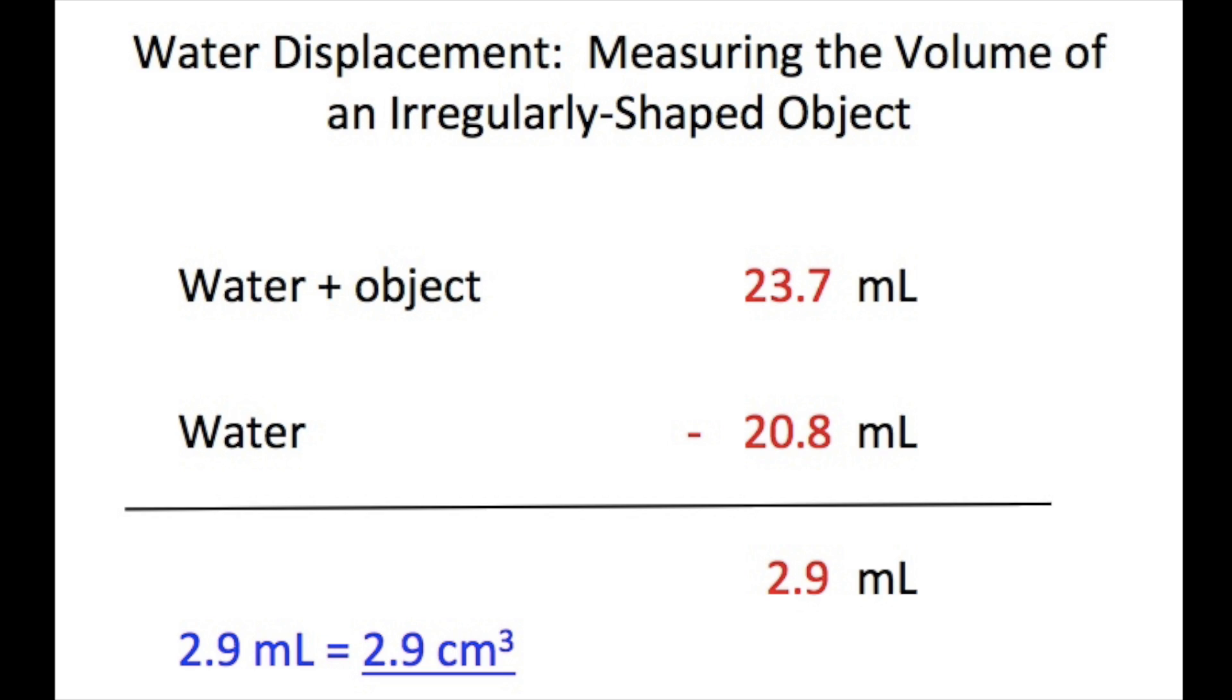It is correct to convert milliliters to cubic centimeters because one milliliter is equal to one cubic centimeter as you learned in class, and because this is a solid, its volume units should be presented in cubic centimeters.